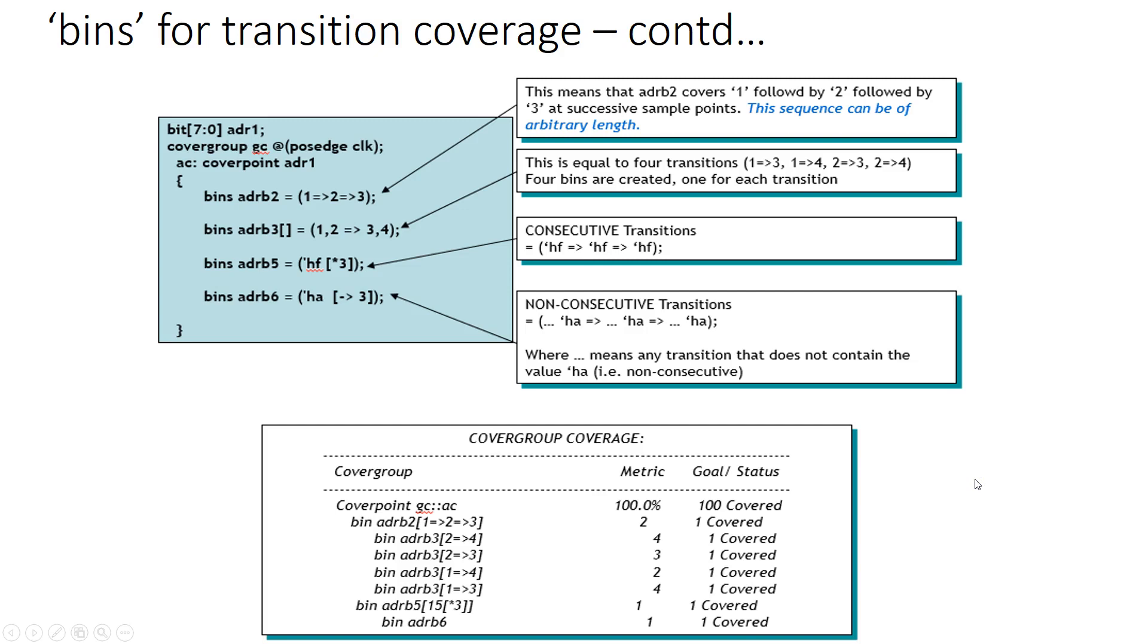Okay let's look at some more semantics of what kind of transitions you can specify. Here again there is a variable called ADR1, 8 bits wide, and I have a cover group GC at positive edge of clock. Inside this cover point for ADR1 I have four different bins declared. The first bin says that ADR1 should go from 1 to 2 to 3 at successive positive edges of clock, and obviously you can have as many transitions as you like in this kind of sequence.